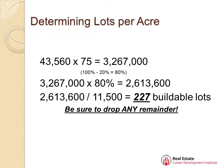So you've got 2,613,600 that's buildable. Now he has to have 11,500 square feet on each lot, so you've got to divide that out and find out how many lots are buildable.